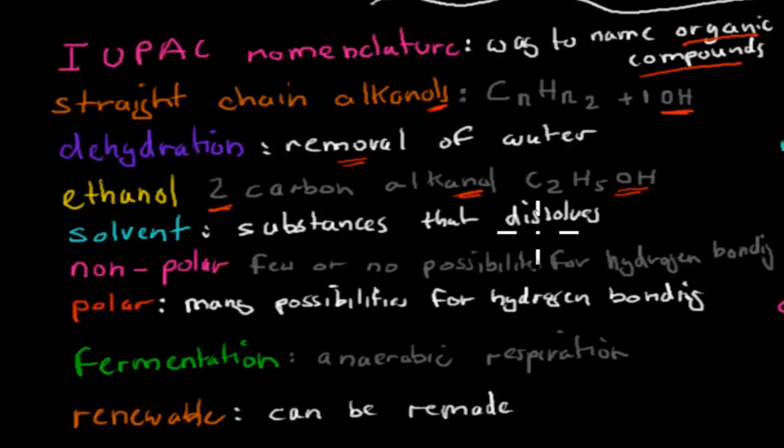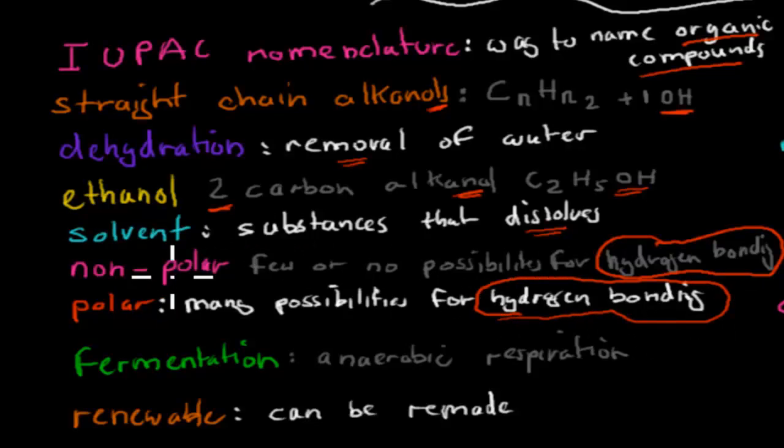A solvent is a substance that dissolves things. Nonpolar means it has few or no possibilities for hydrogen bondings. These hydrogen bondings, or dipole interactions, they allow for strong bonds. So if it's nonpolar, it has few of these possibilities. And if it's polar, it has many possibilities for hydrogen bondings. We said that ethanol is a good solvent because it has both a nonpolar hydrocarbon end and a polar OH end.